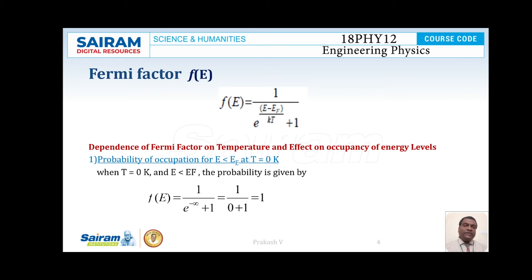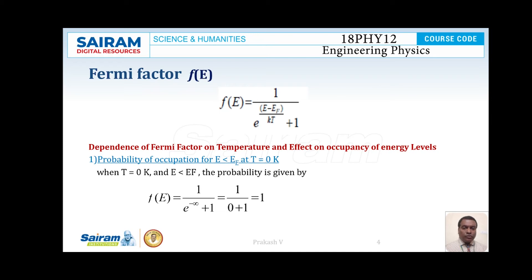F(E) = 1 / [e^((E − EF) / KT) + 1]. If an energy level is empty, then the value of F(E) is equal to 0. If the energy level is filled with an electron, then the value of F(E) is equal to 1. Therefore, the value of F(E) ranges between 0 and 1.